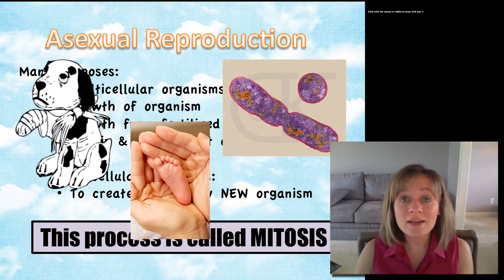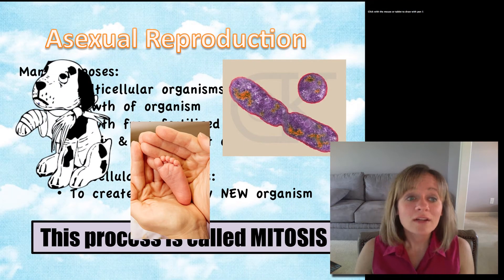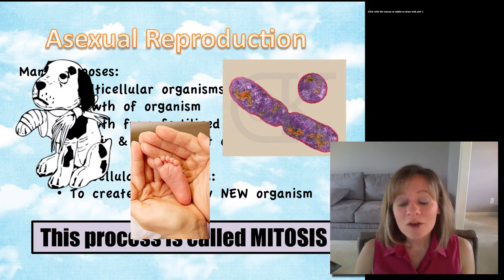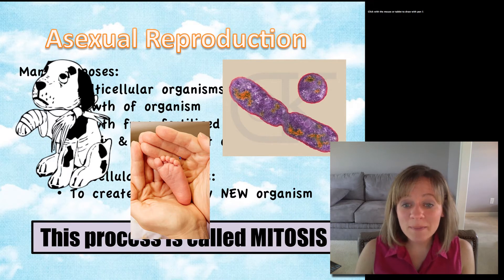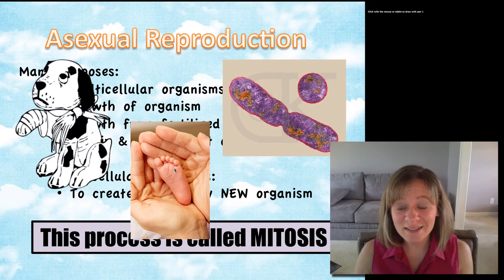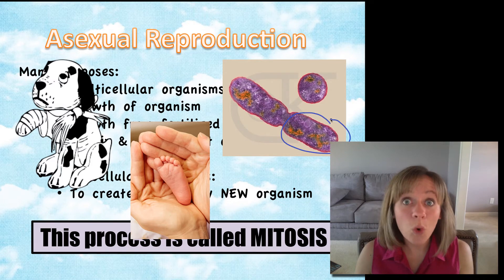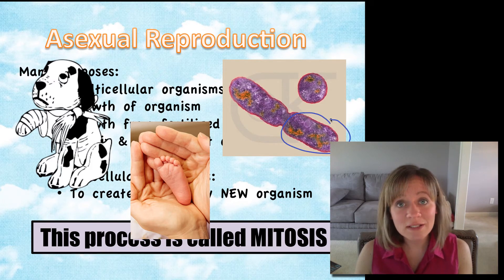Any time you have any injury, like this poor little puppy dog here, this puppy is undergoing mitosis to repair and replace those arm cells. Growth from a fertilized embryo into a baby and from a baby into an adult — that baby is undergoing mitosis constantly. And unicellular organisms, like this bacteria, are undergoing asexual reproduction to make an entirely new organism, a brand new but identical cell.